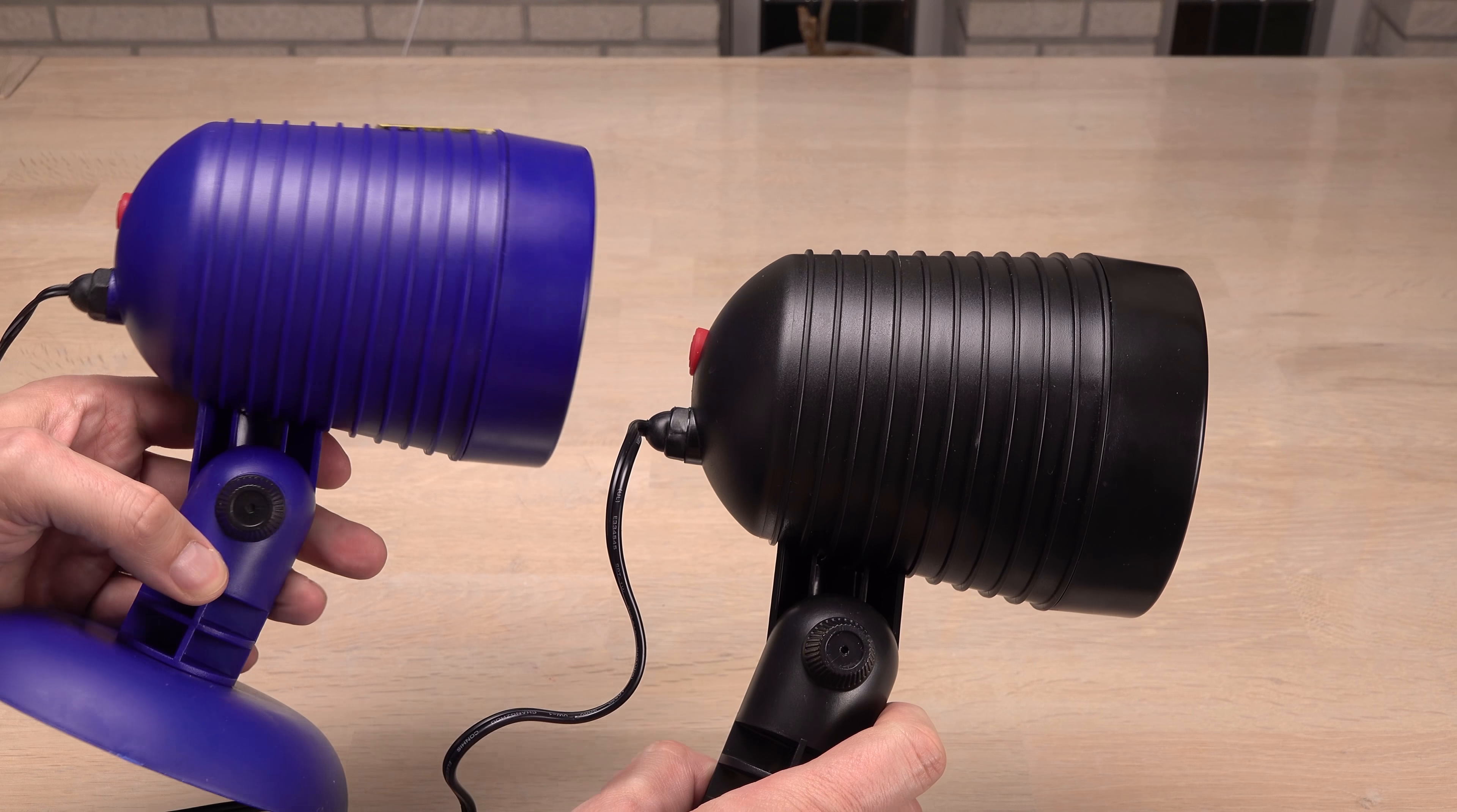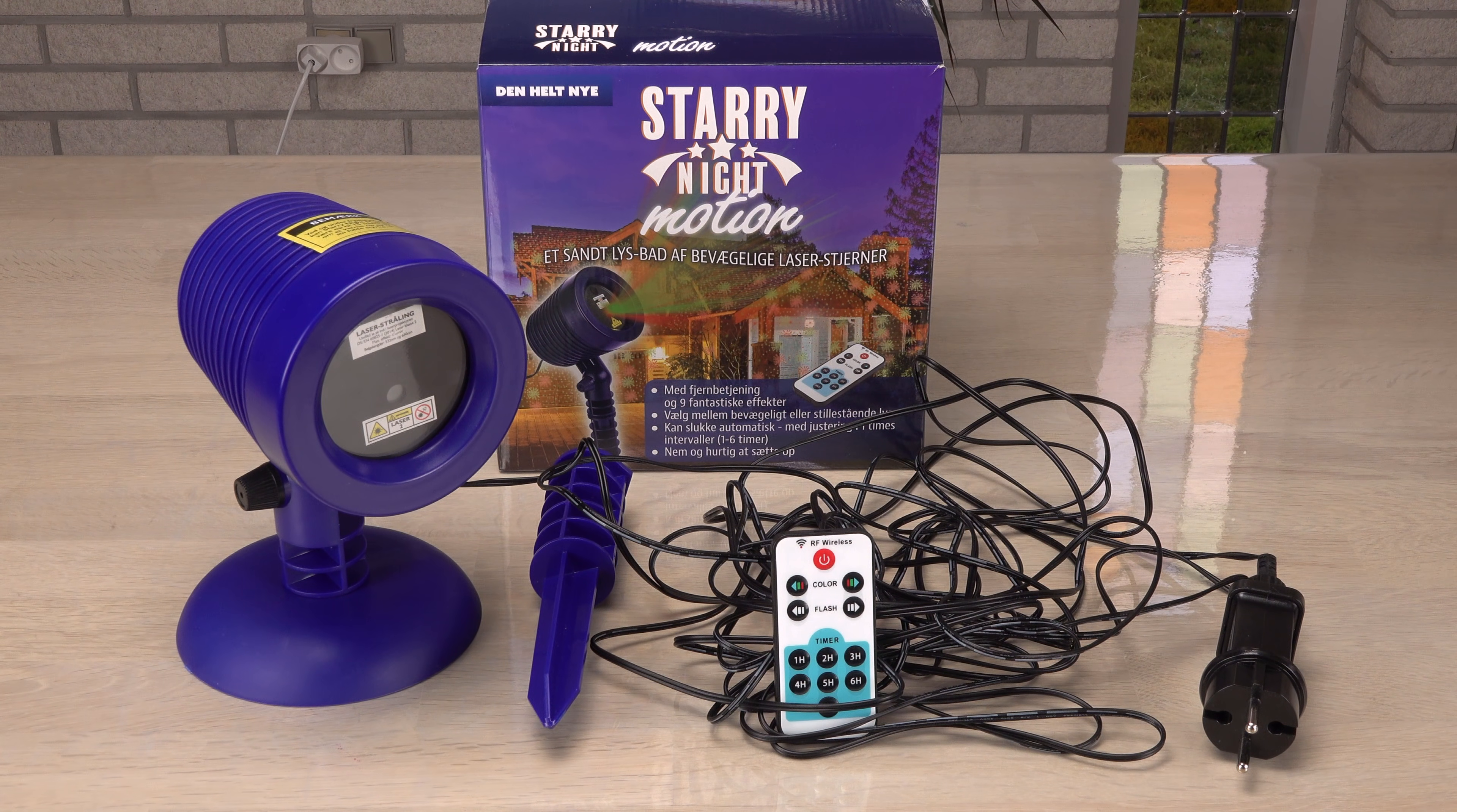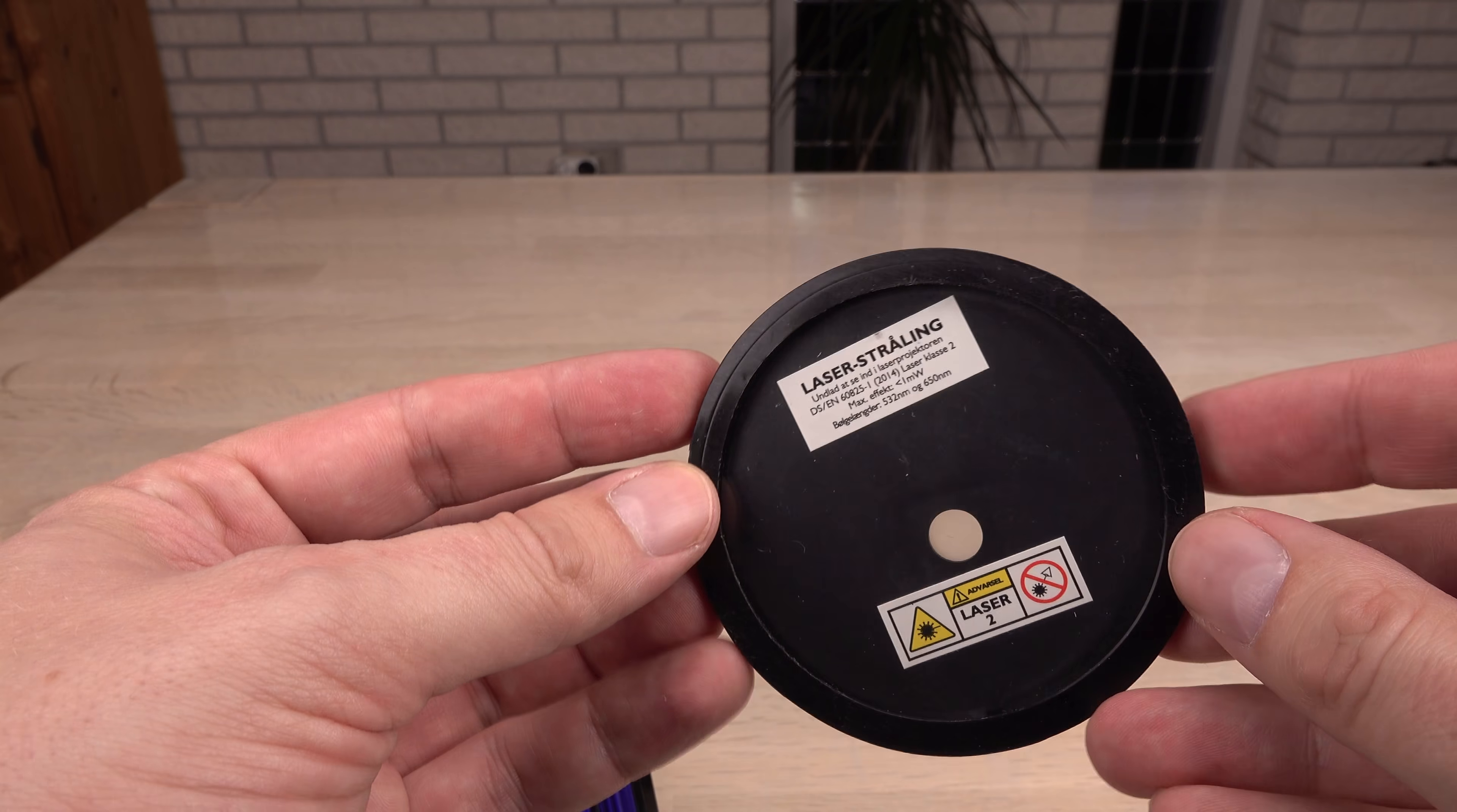Let's move on to some that do have the motion function. The two single aperture models look very similar on the outside and have similar functions. Except the black one does not have remote control and the motion function seems broken. If I open the working one first, I may be able to figure out how to fix the broken one.